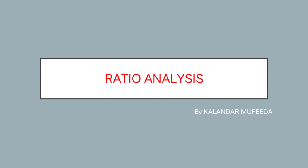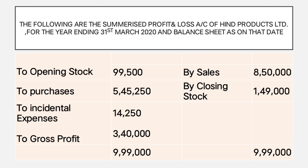Hello students, today in ratio analysis we'll solve the next problem. The following are the summarized profit and loss account of In The Products Limited for the year ending 31st March 2020 and balance sheet as on that date. In the trading account: opening stock 99,500, purchases 5,45,250, incidental expenses (direct expenses like wages, freight, octroi), sales 8,50,000, and closing stock 1,49,000.